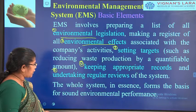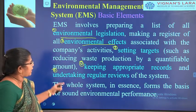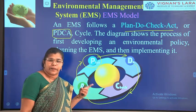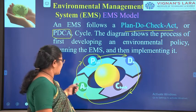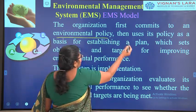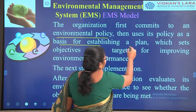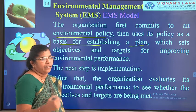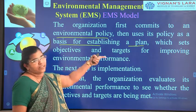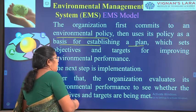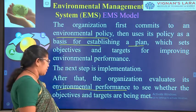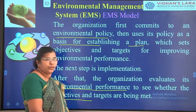The PDCA cycle begins with the organisation committing to an environmental policy, which is the basis for establishing a plan. When going for EIA approval, a plan is submitted based on the policies being followed. After making a plan, the organisation evaluates its environmental performance to see whether objectives and targets are being met — that is the 'Do' step. Then checking is done: a corrective action is taken if needed. Whether the work is going in the right direction has to be properly checked.